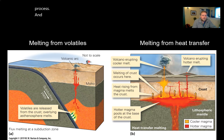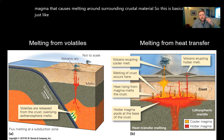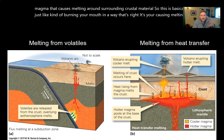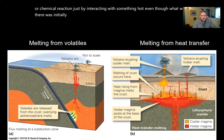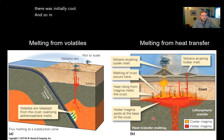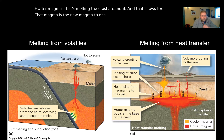The volcanoes in Washington State and Oregon form through this volatile-driven subduction process. The third type — melting from heat transfer — is where rising hot magma causes melting of surrounding crustal material, similar to burning your mouth: you're causing melting just by interacting with something hot. Hotter magma melts the crust around it, allowing new magma to rise up and erupt as a volcano.